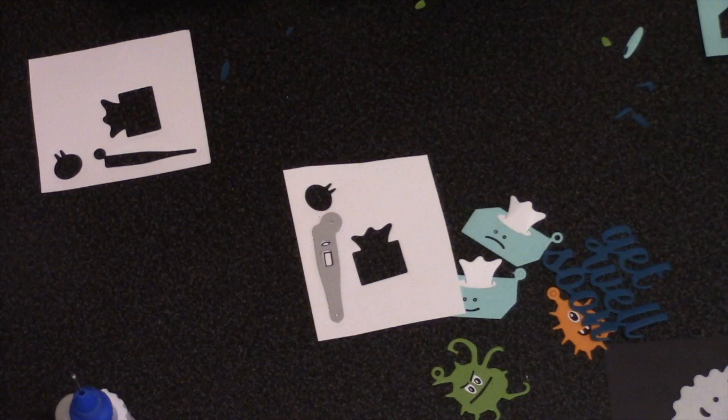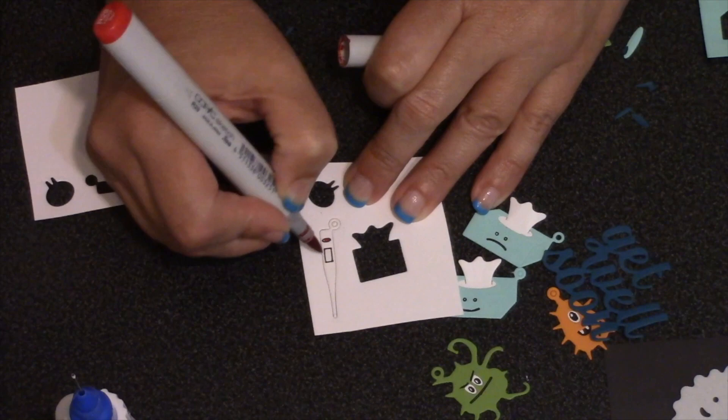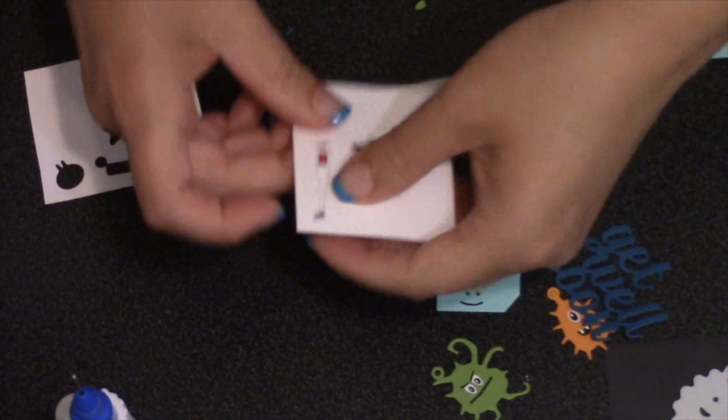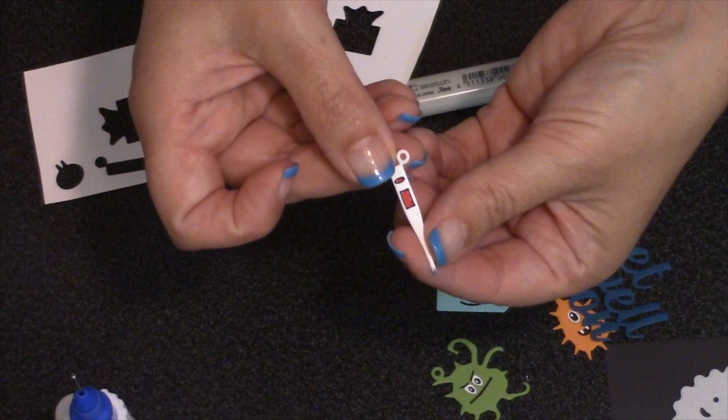Okay, moving on to the thermometer charm. There is a stencil feature to add the button and the display. I'm going in and tracing those with a black pen and then I will just fill those in with a marker. I've decided to make them both red. And then I also want to add just a little bit of gray out on the tip of the thermometer. Super quick assembly on that thermometer charm.